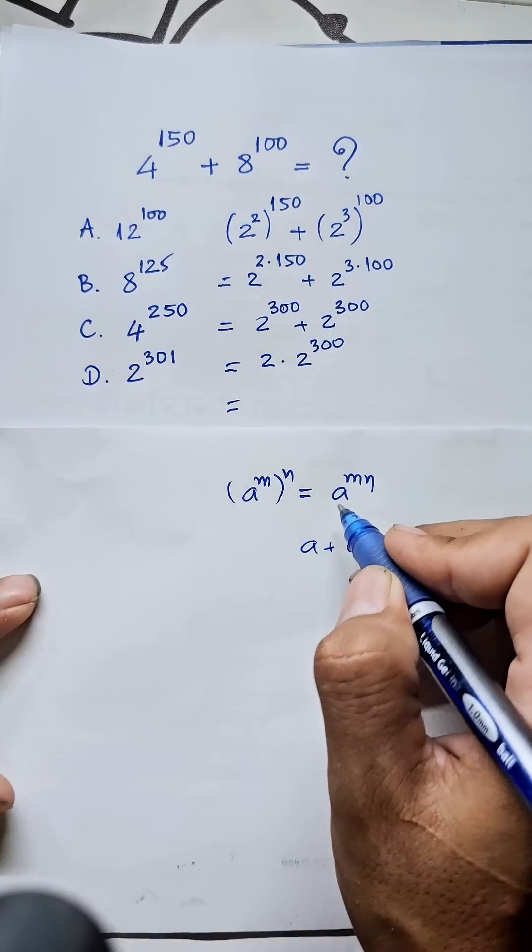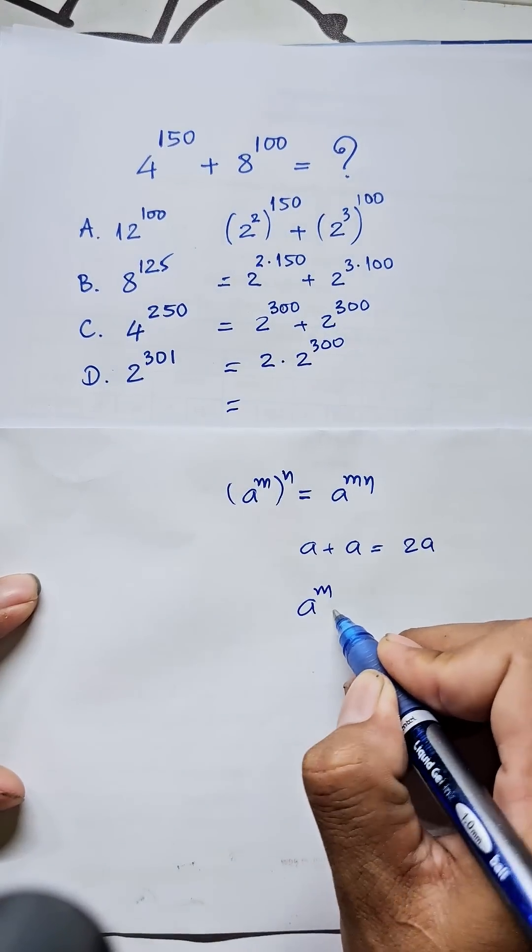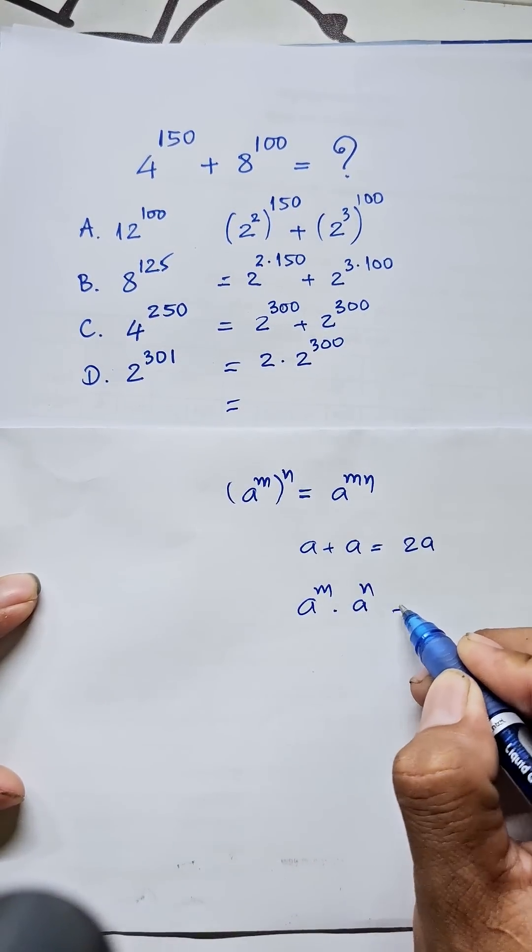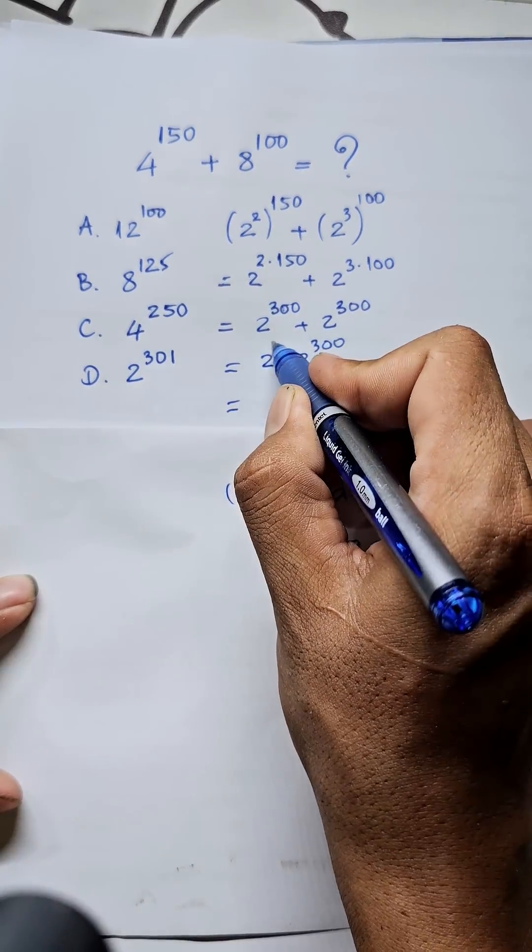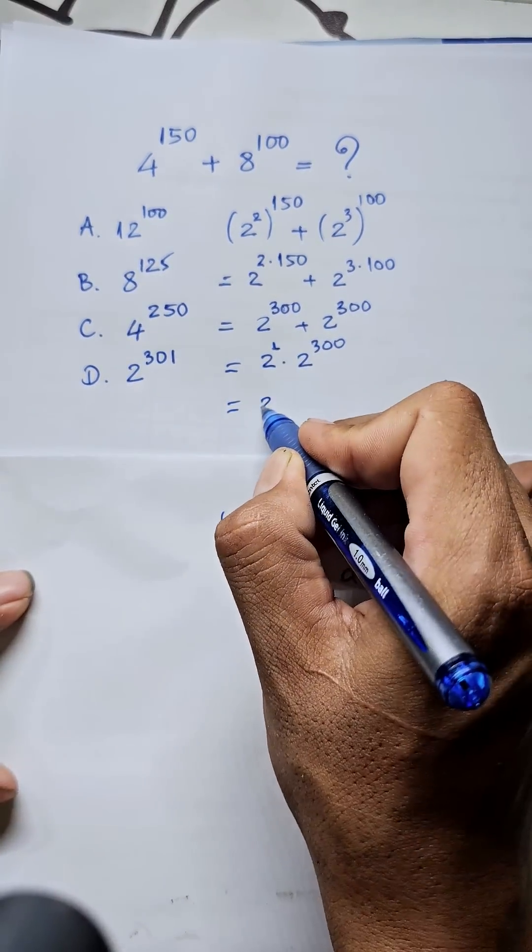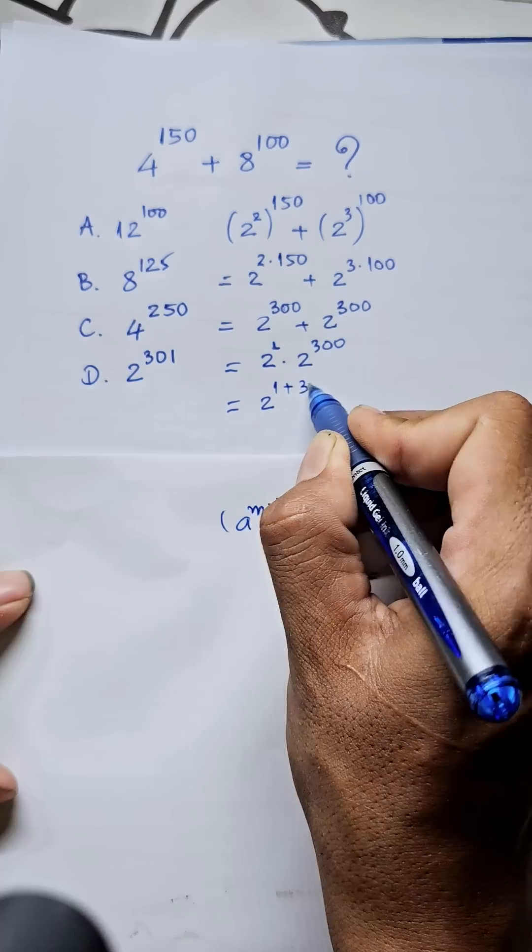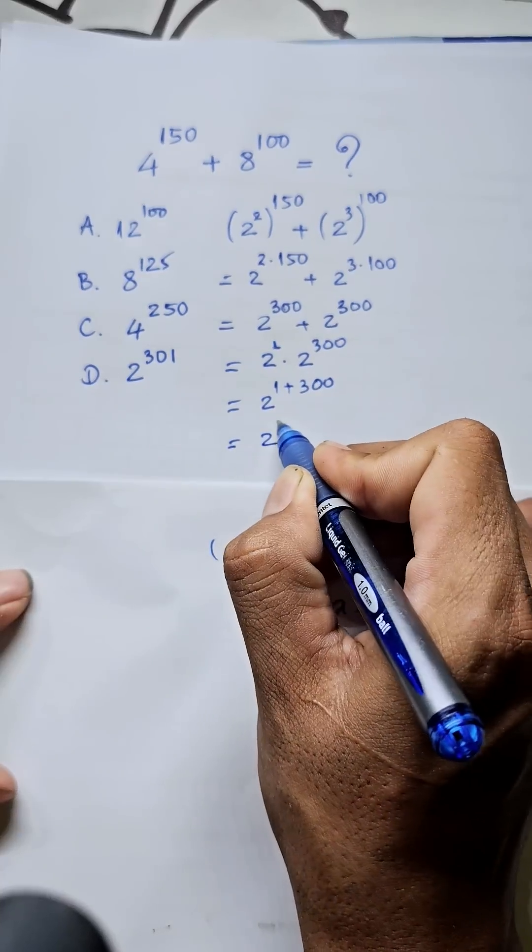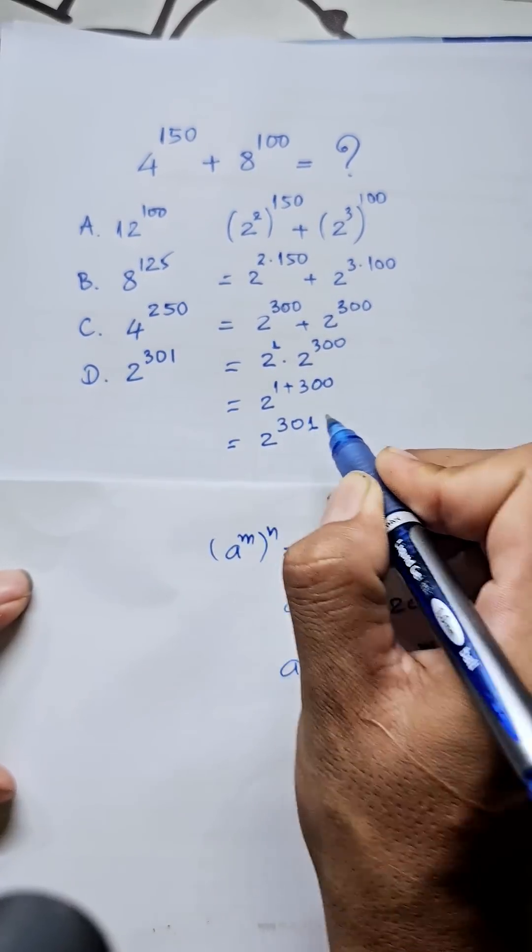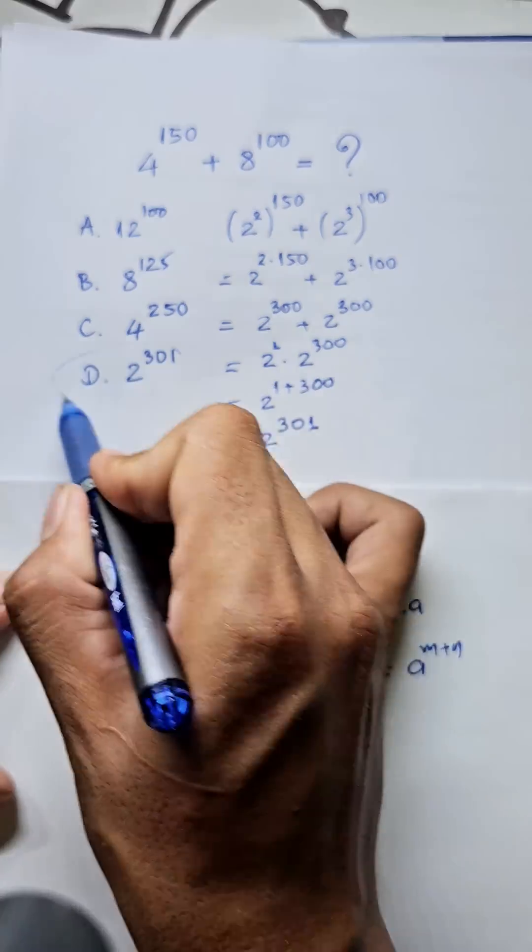Now we use the formula: a^m times a^n equals a^(m+n). Here 2 is 2^1, so we get 2^(1+300) equals 2^301. So our answer is D.